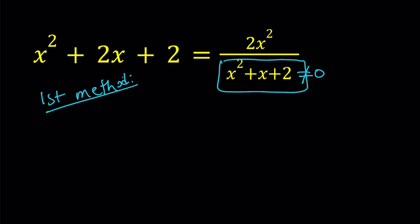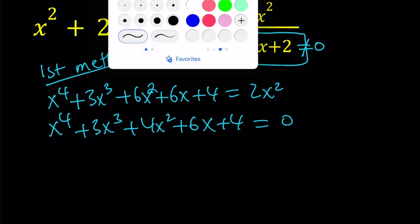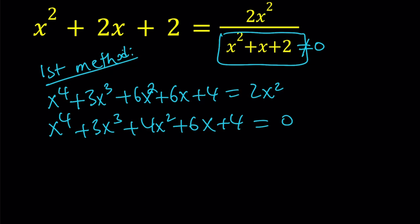If you distribute this completely, you're going to get x⁴ + 3x³ + 6x² + 6x + 4 equals 2x². Then let's subtract 2x². x⁴ + 3x³ + 4x² + 6x + 4 is equal to 0. Now, this quartic may not make much sense to you and I don't think you want to use the quartic formula because that's pretty complicated.